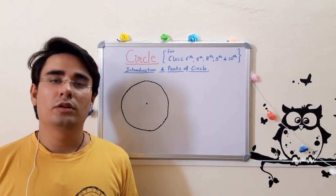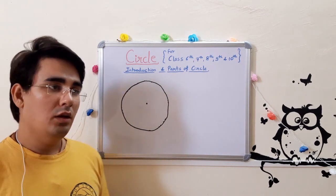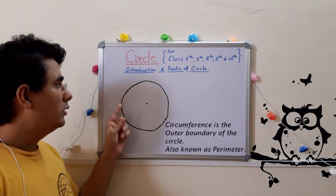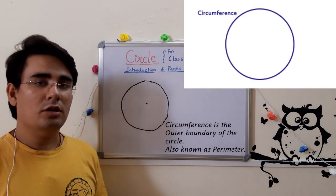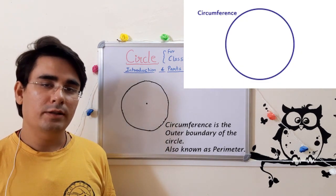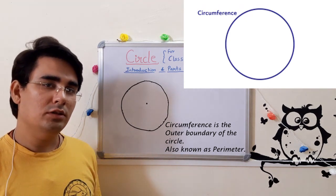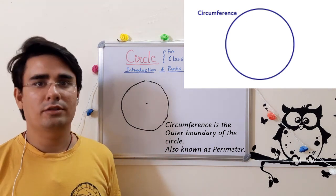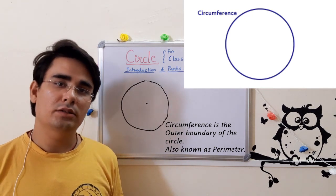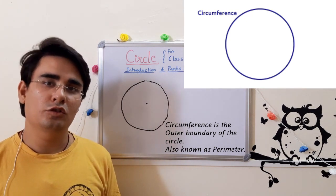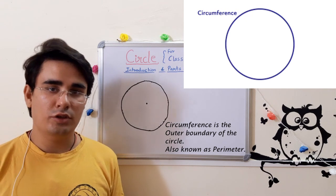Now let us move toward part of the circle. So this outer boundary is known as the circumference. Circumference is the outer boundary of the circle, which we also know as the perimeter. Perimeter is used for polygons, whereas circumference is used for circle, curved shapes.